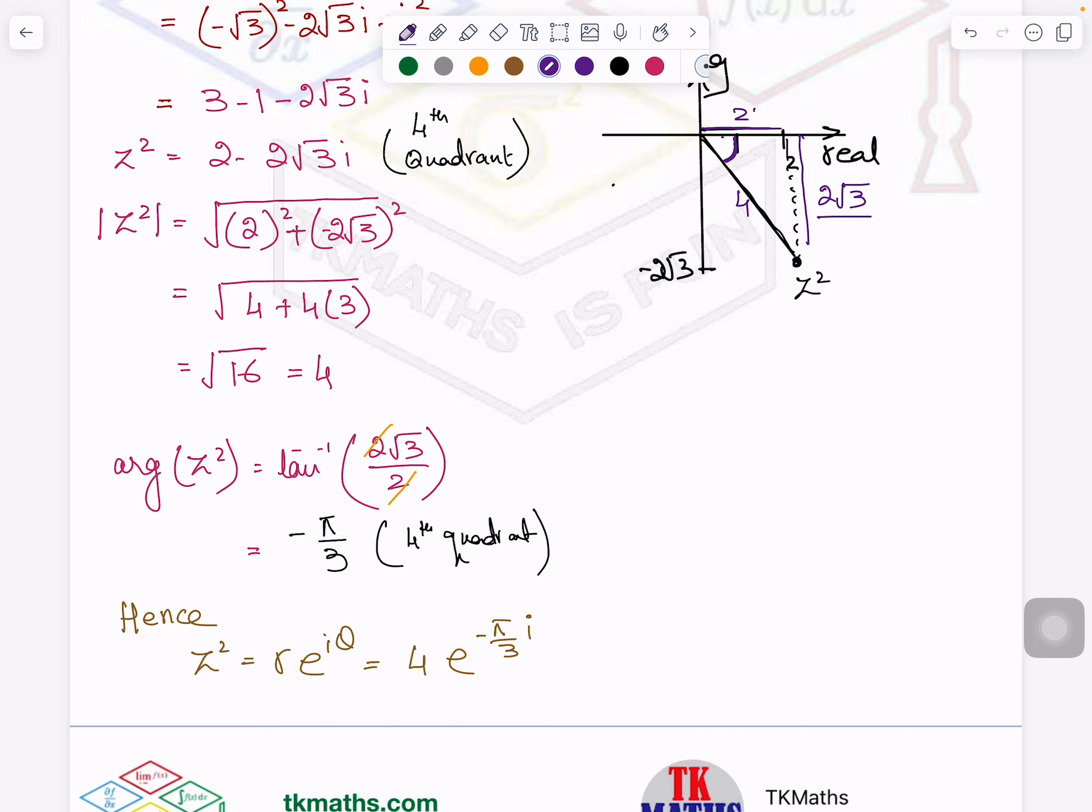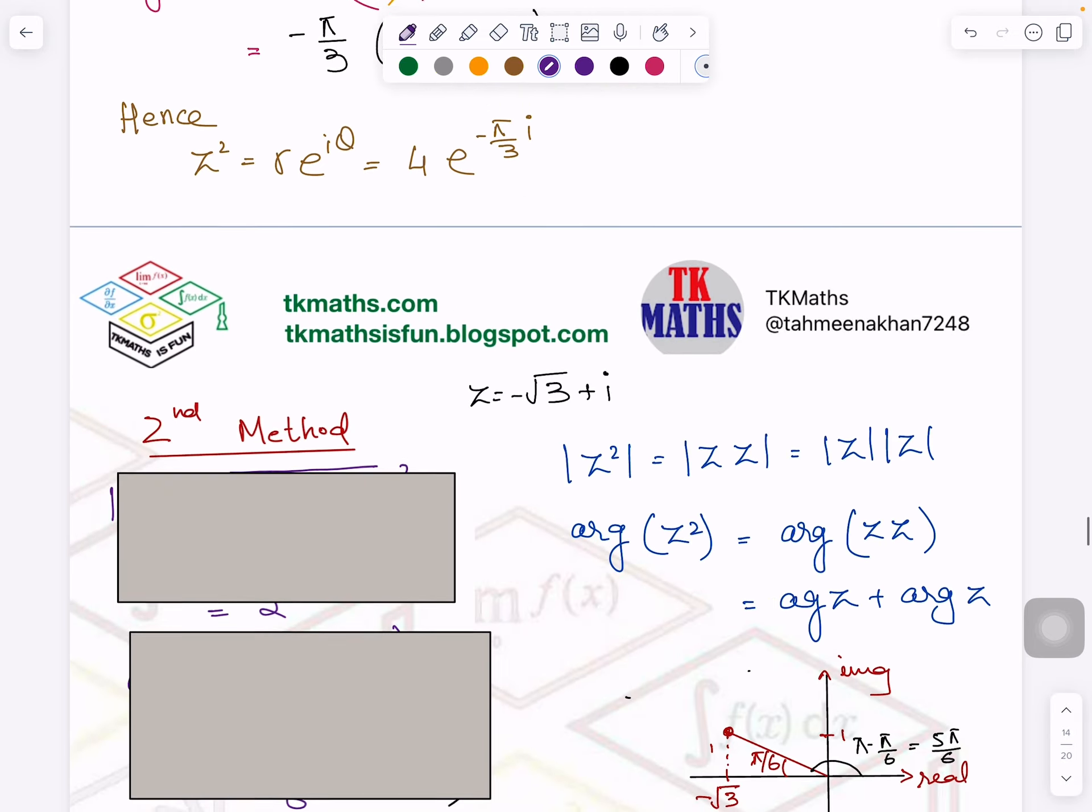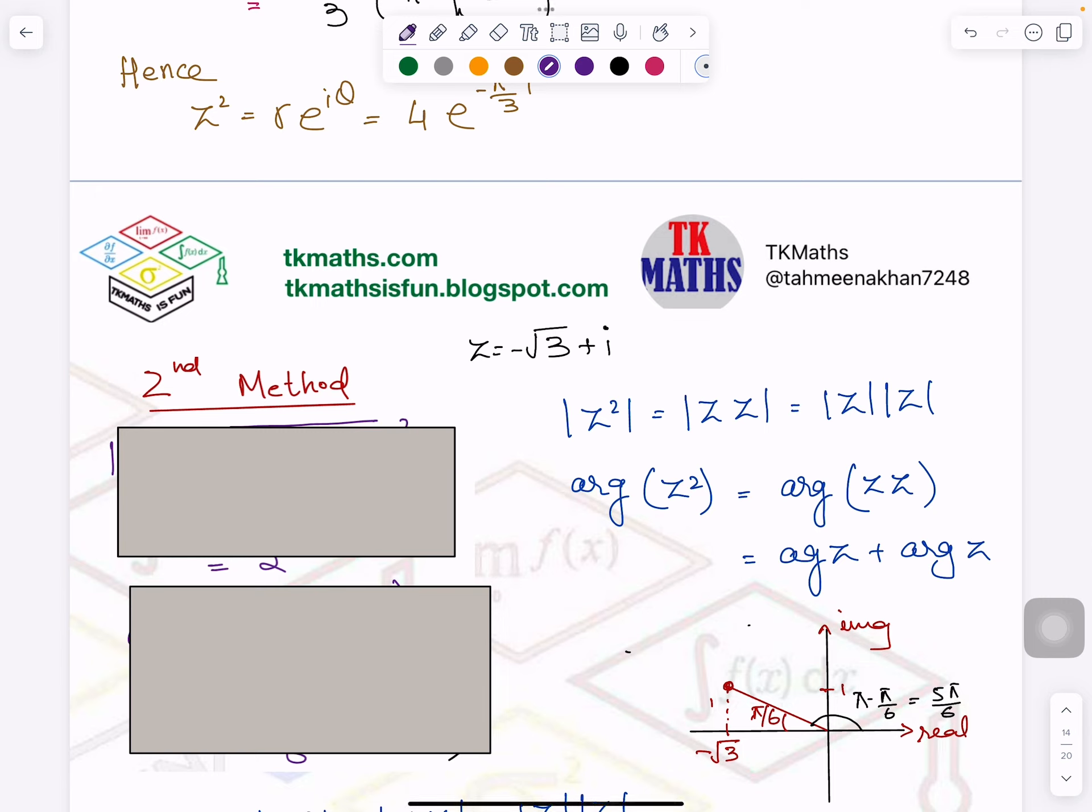Second method I am just doing very quickly using the formula which I have just told you here. This formula I will apply now. So you can see here, I will find out the modulus of Z. Why? Once I will know it, I will simply multiply it by itself.